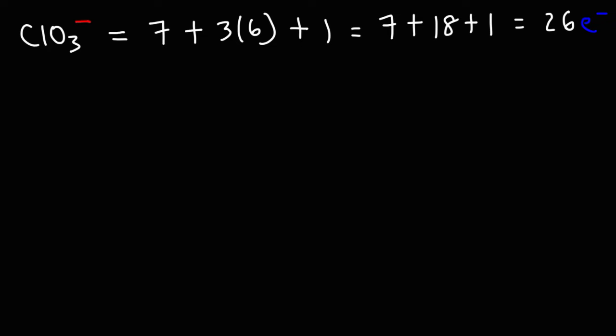Now, we could use this number to calculate how many electrons or lone pairs will be on the central chlorine atom. So let's make a list of the multiples of 8. What we want to do is choose the highest multiple of 8 just under 26, and so that's going to be 24. If we subtract 26 by 24, it will give us 2. So this tells us that we're going to have 2 electrons, or 1 lone pair, on the central chlorine atom.